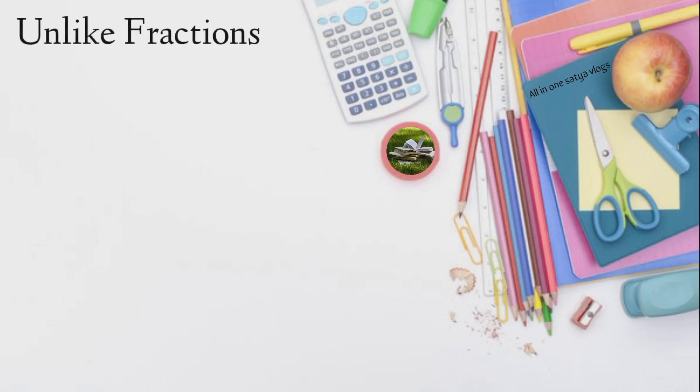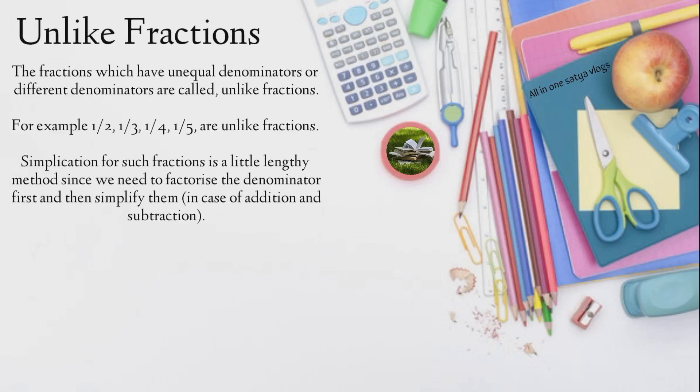Unlike fractions. The fractions which have unequal denominators or different denominators are called unlike fractions. For example, 1/2, 1/3, 1/4, 1/5 are unlike fractions.